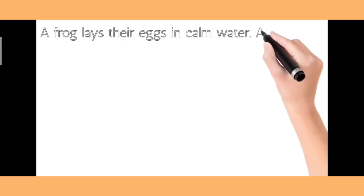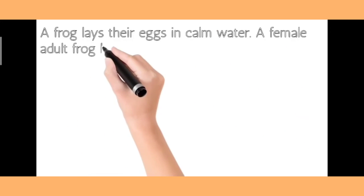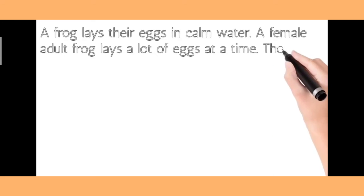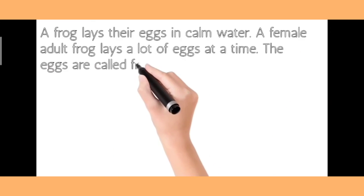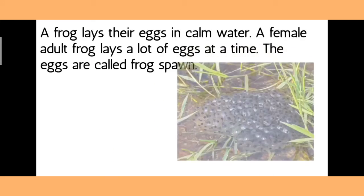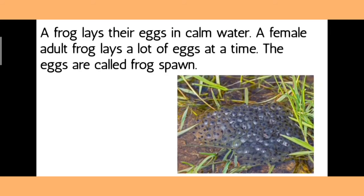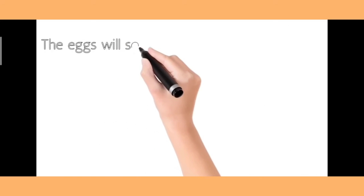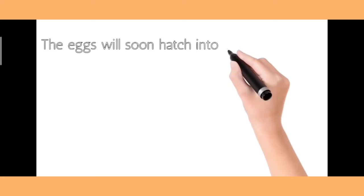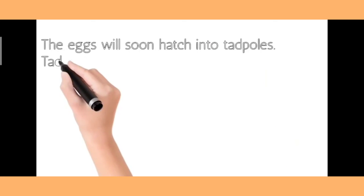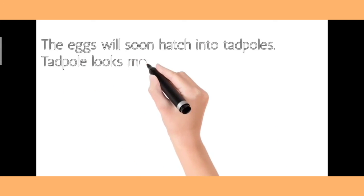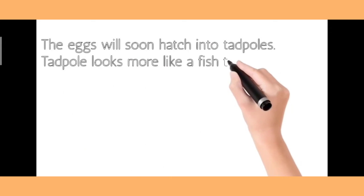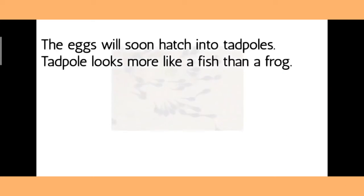A frog lays their eggs in calm water. A female adult frog lays a lot of eggs at a time. The eggs are called frog spawn. The eggs will soon hatch into tadpoles. Tadpole looks more like a fish than a frog.